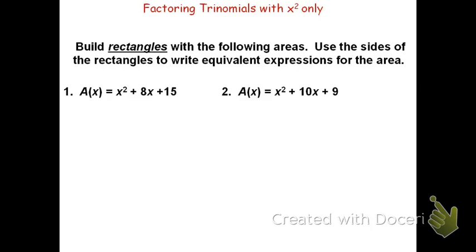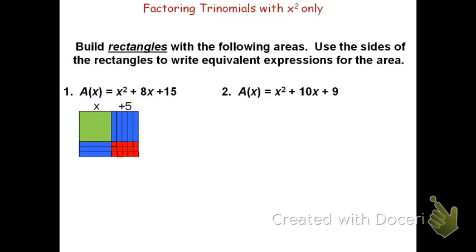I need to break the 8x's apart. I know that 5 plus 3 is 8, and 5 times 3 is 15. If I arrange the tiles in this fashion, the 5x and the 3x give me a total of 8x's, and the space that they provide — the 5 by 3 — uses the 15 one's tiles. The dimensions of this new rectangle would be x extended 5 units, or quantity x plus 5, by x extended 3 units, which would be quantity x plus 3. The area can therefore be written as x equals quantity x plus 3 times quantity x plus 5.